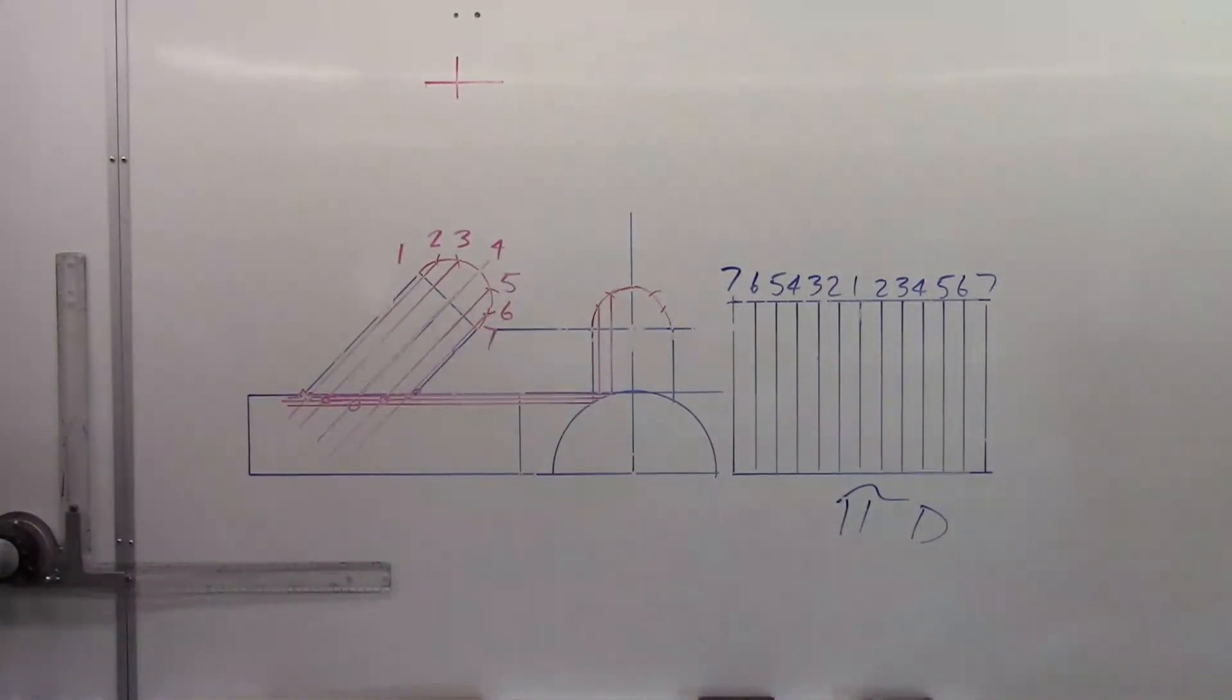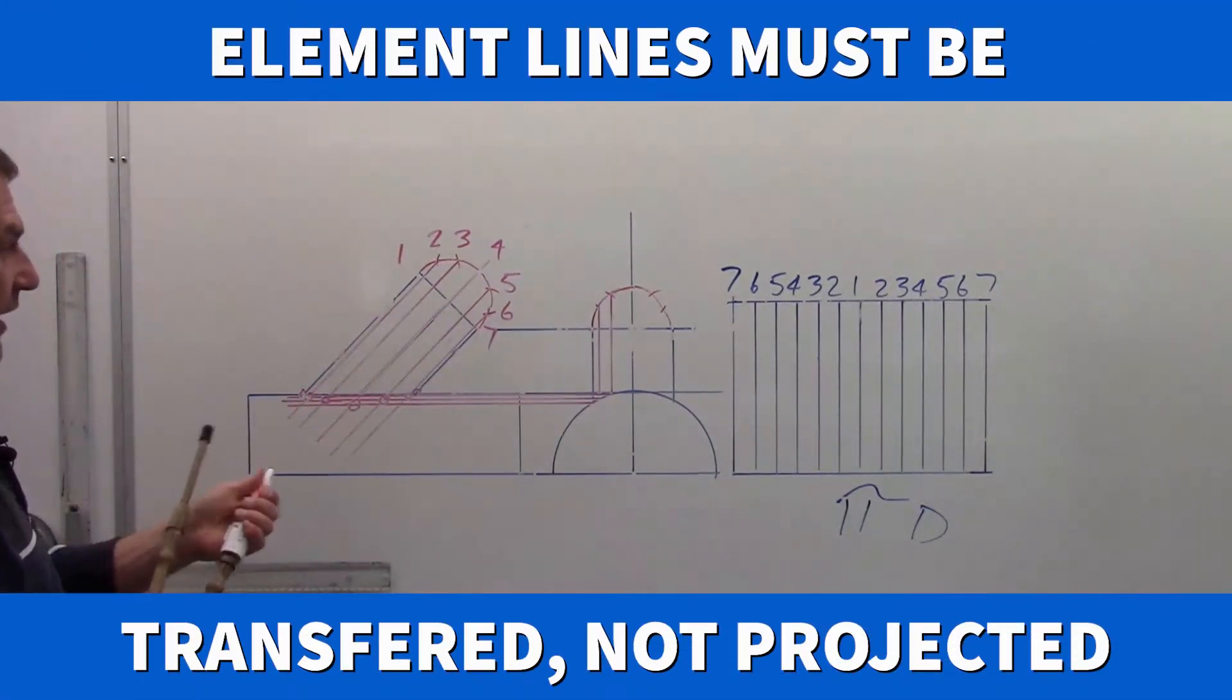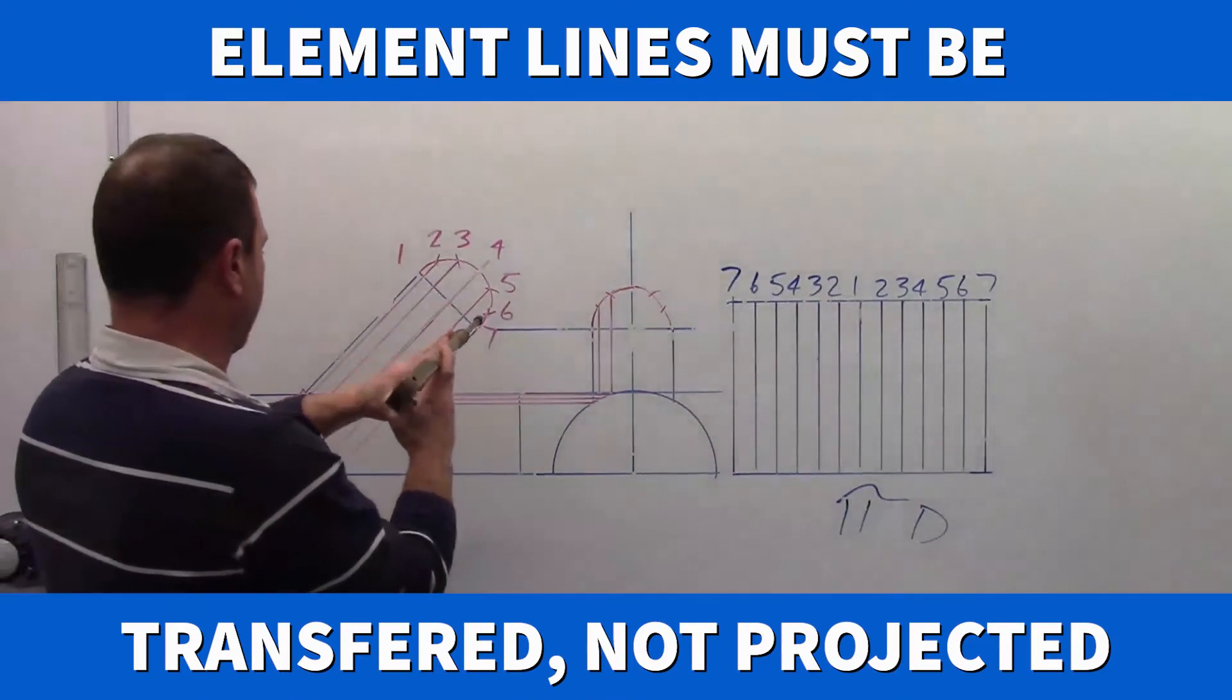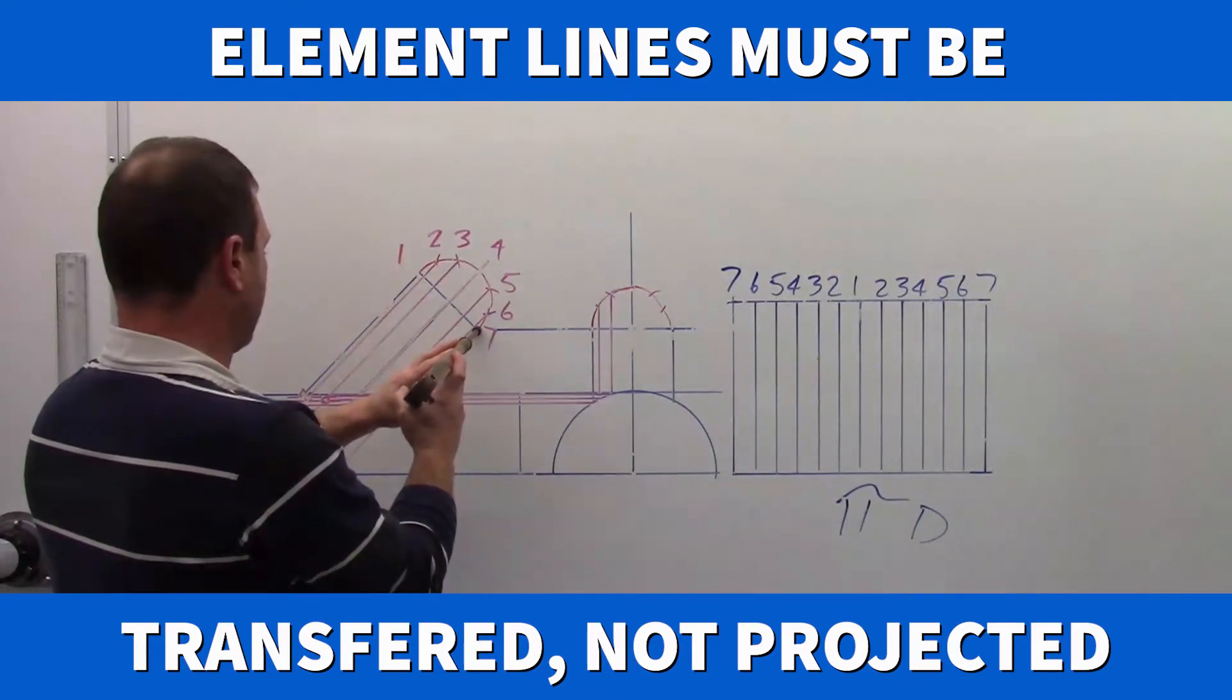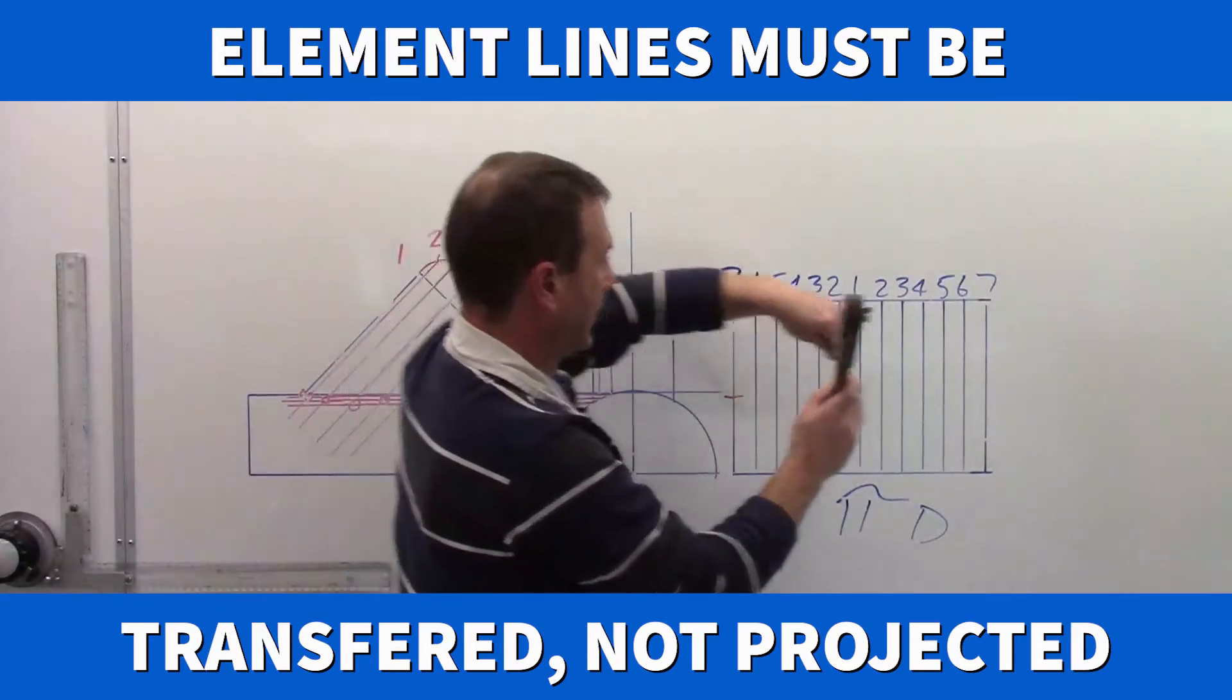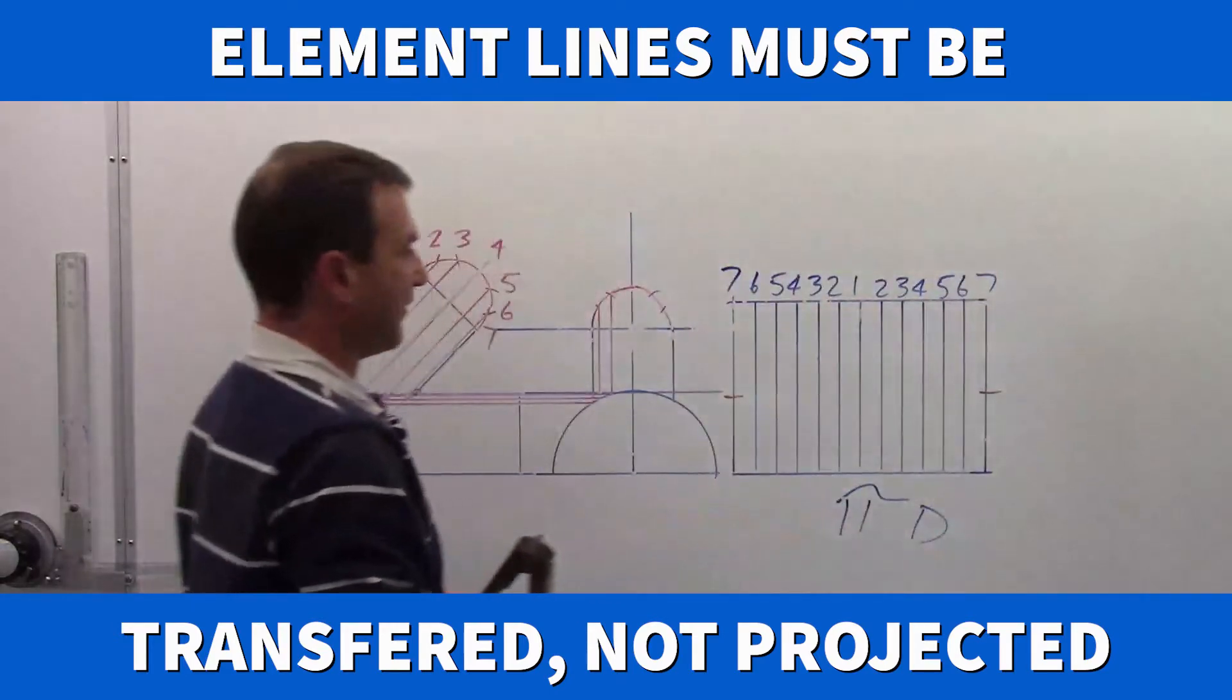I am going to grab my corresponding point and get it transferred on to my stretch out. Coming from the top down, I am going to pick up seven here. And I am going to swing it down.